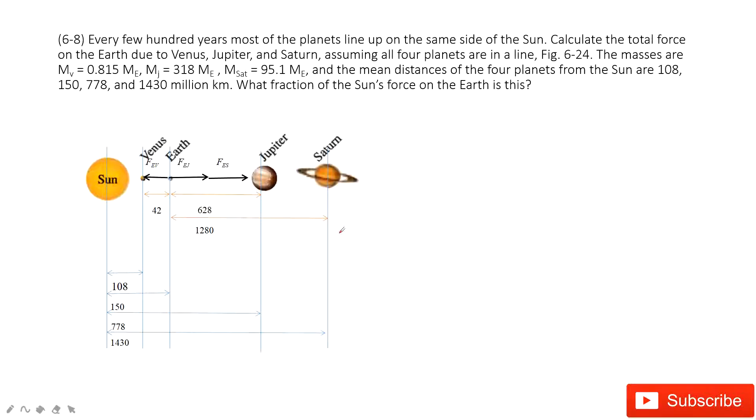First thing we can decide is distance between each other. The problem gives you the distance between Sun with each other. So after you draw this picture, you can very easily find the distance between Venus and Earth, the distance between Earth and Jupiter, the distance between Earth and Saturn.